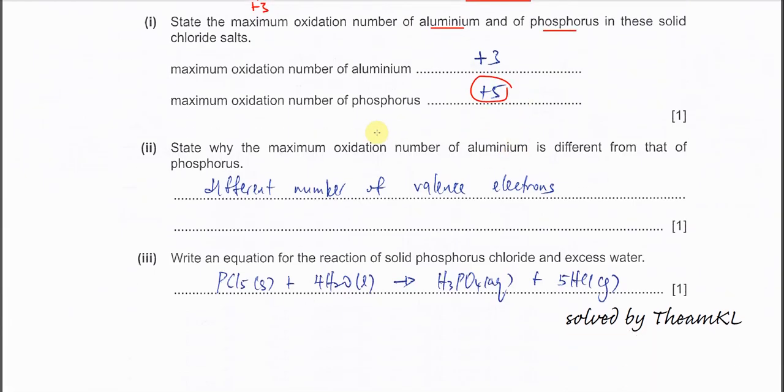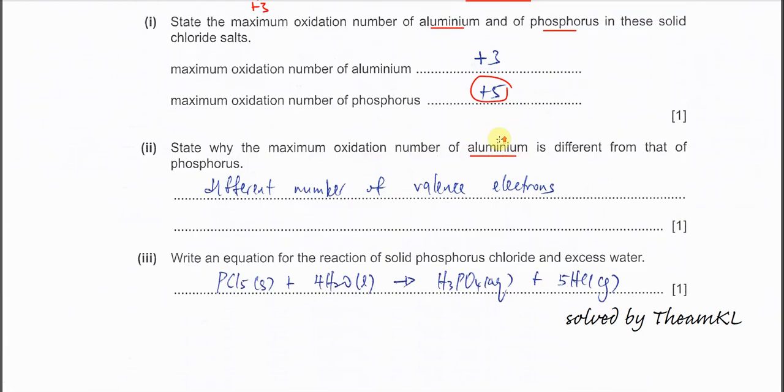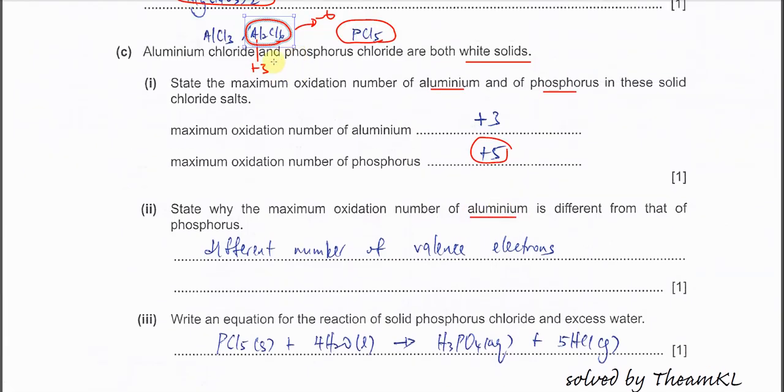Part 2. State why the maximum oxidation number of aluminum is different from phosphorus. Aluminum is group 13, so it's positive 3. Group 13 has 3 valence electrons. Phosphorus is group 15, so it's 5 valence electrons. The difference is the number of valence electrons.